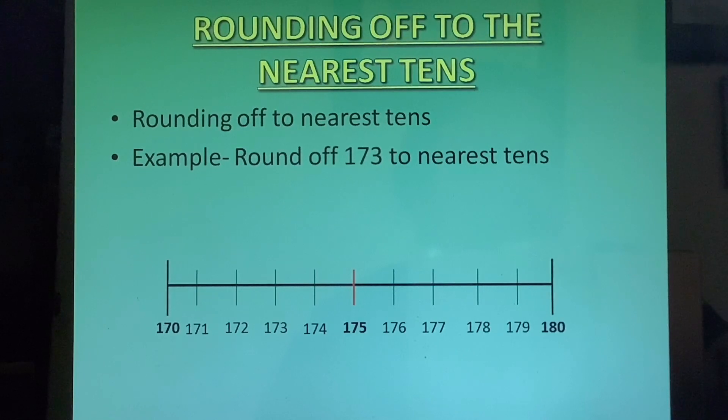Round off 173 to the nearest tens. So now the number line model. There is 170 on one extreme and 180 on the other side. So these are the limits, lower limit and upper limit. And now we see where does 173 fall. We will divide all the numbers on the number line in two categories. One will be from 170 to 174, and the other bracket is from 175 to 180.